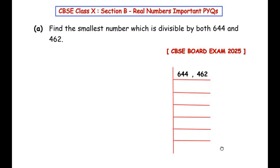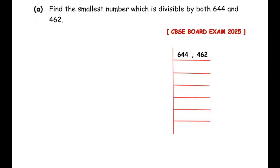We have written both numbers together to find the LCM using prime factorization. Both numbers end with an even digit, so both are divisible by 2. Dividing 644 by 2: 2×322, then 2×161, giving us 644 = 2×2×161. Dividing 462 by 2 gives 231. Now 322 divided by 2 gives 161 with remainder, so we get 2×161. 231 ends with 1, so it is not divisible by 2.